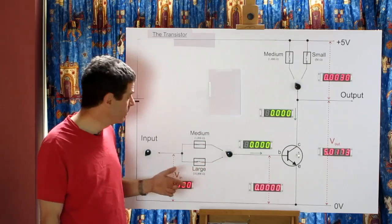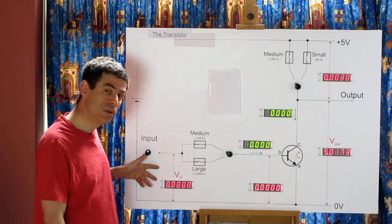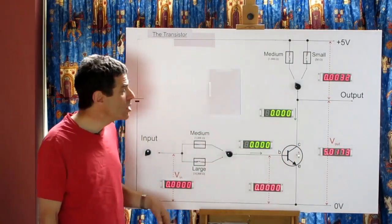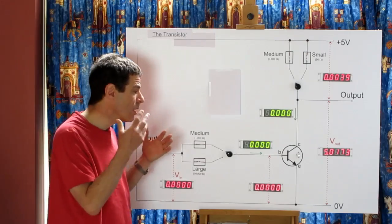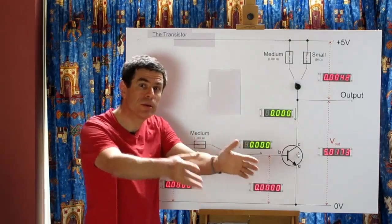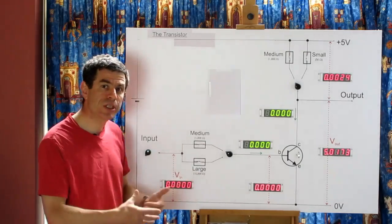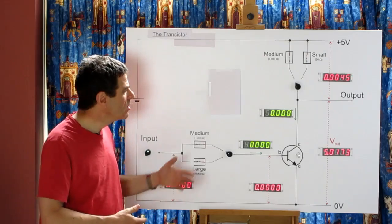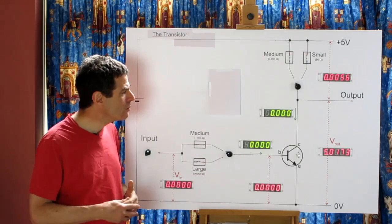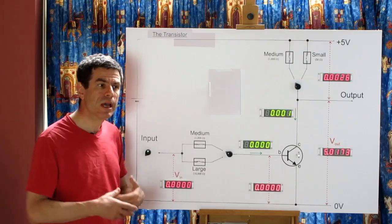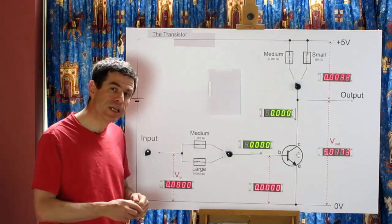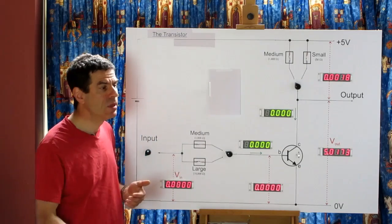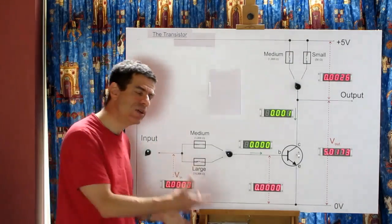Something to notice about this circuit is that the control is a voltage and the output is a voltage. You can start to see how you could have a large number of these circuits, each one controlling the next, to do something interesting like create a processor. If you wanted to create a processor, these circuits need to be performing logical operations — an operation which takes one or more inputs and combines them according to certain rules to generate the output. Different rules give a different logical operation.